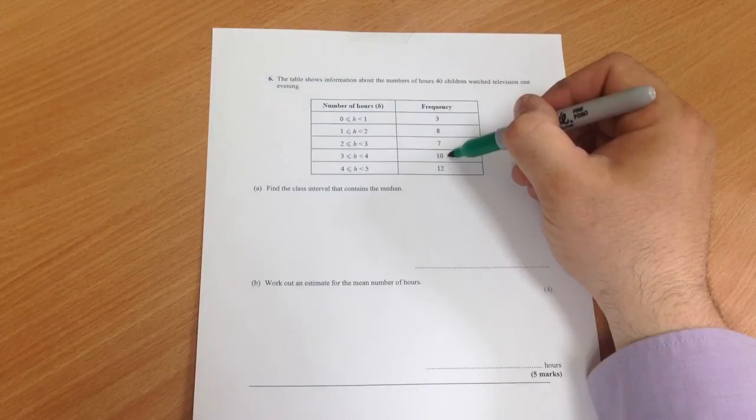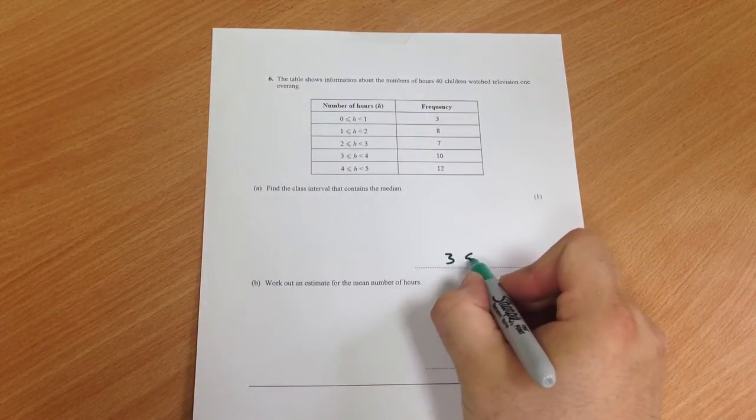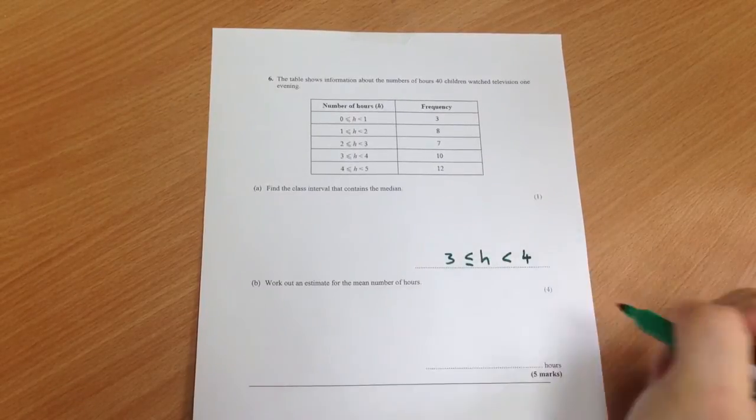this group here contains the 20th and 21st person. So the answer here is 3 less than equal to h less than 4.